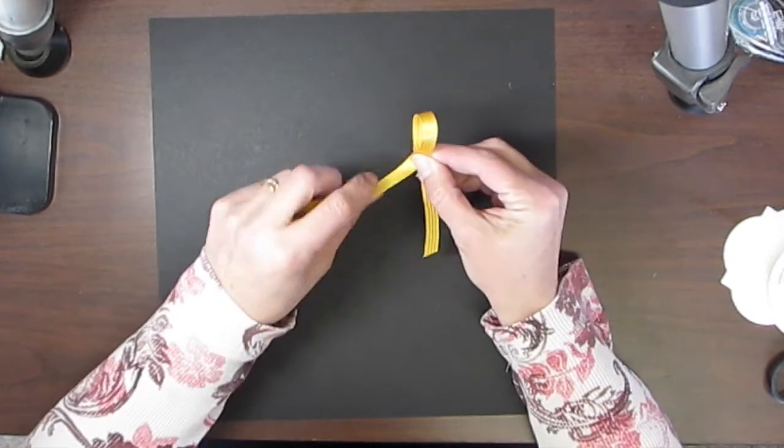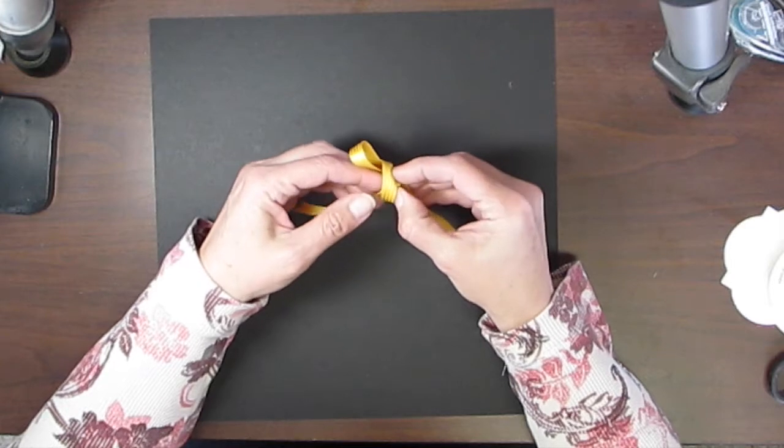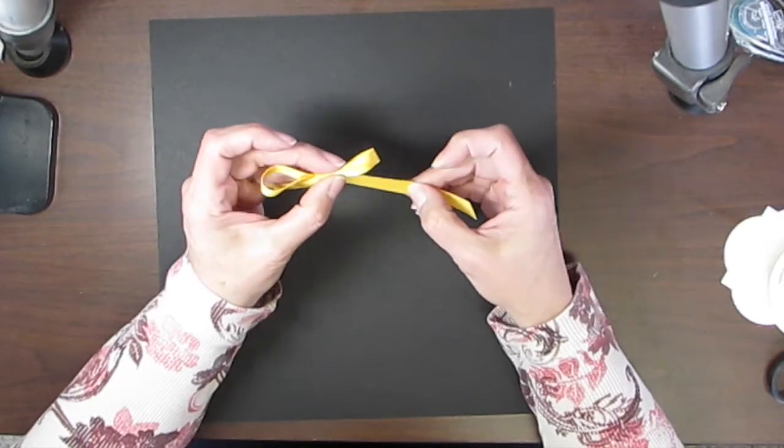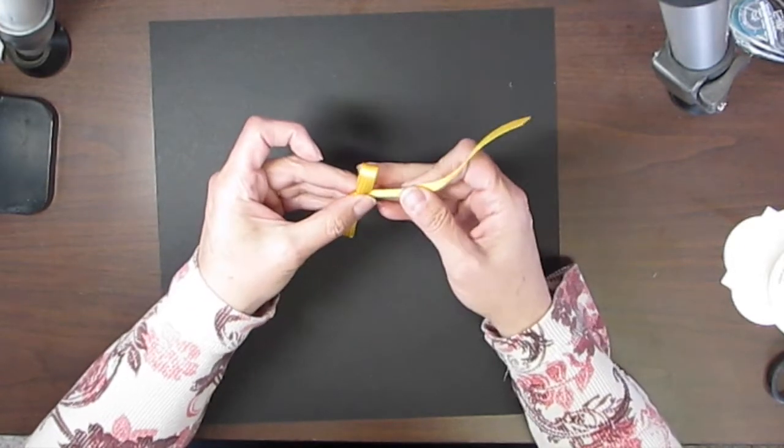Make a loop on one end, bring this one around your thumb, and then the other piece through that hole. And there you have it - there is a flat bow.